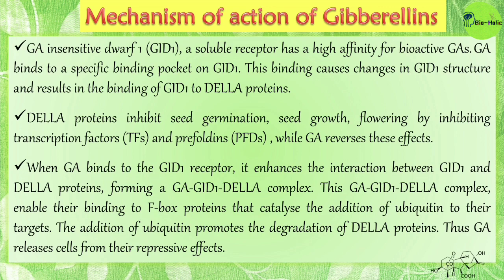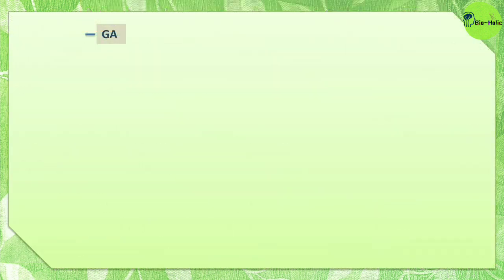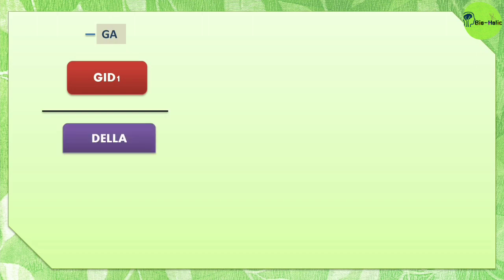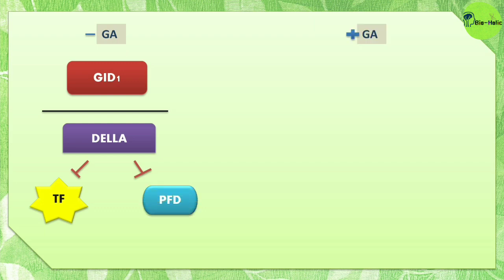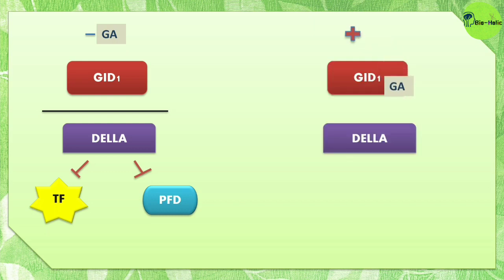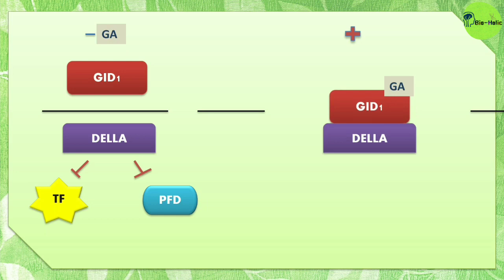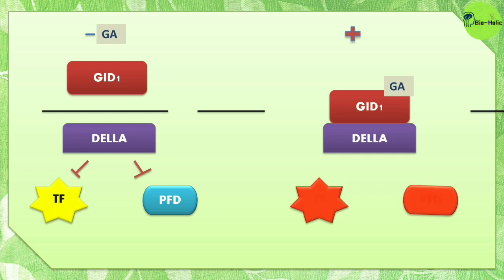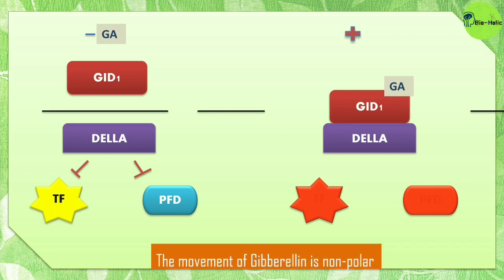Once DELLA proteins are degraded, their inhibiting action on transcription factors disappears and GA releases cells from repressive effects. When there is no gibberellin, GID1 cannot bind to DELLA proteins, and DELLA inhibits the transcription factors and prefolins. When there is sufficient gibberellin, it binds to GID1, enabling GID1 to bind with DELLA proteins, forming a GA-GID1-DELLA complex. The DELLA proteins can no longer inhibit transcription factors, so transcription factors and PFDs become active and cellular changes occur. Unlike auxin, the movement of gibberellin is non-polar.